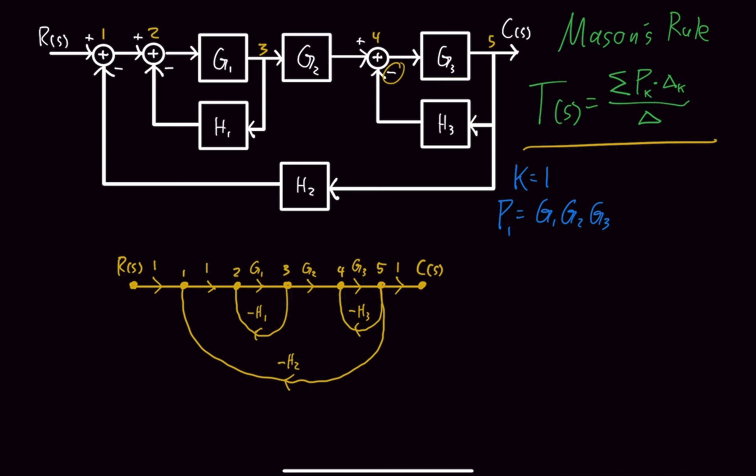Now let's look at our single loop gains. So in order to find our single loop gains, let me change the color. So I'll put L1, and I'll do this loop first, equals negative G3 H3. Loop 2, I'll do negative G1 H1. Then loop 3, I'll do this whole loop, negative G1 G2 G3 H2. Those are all of our single loop gains.